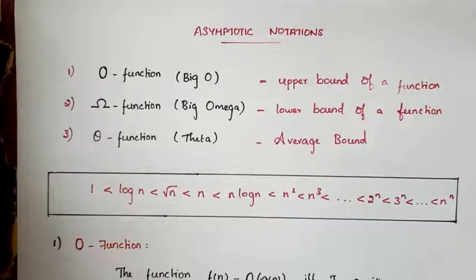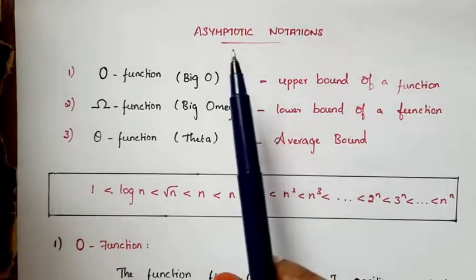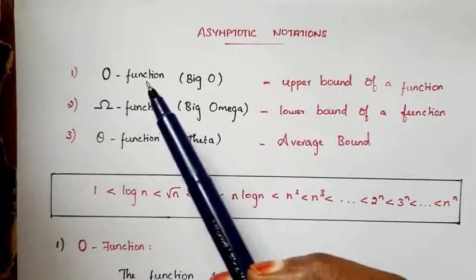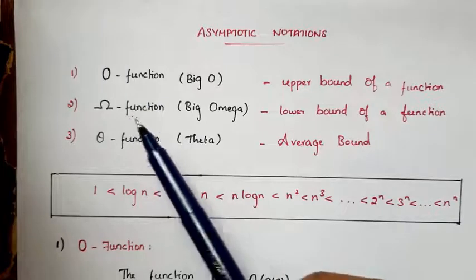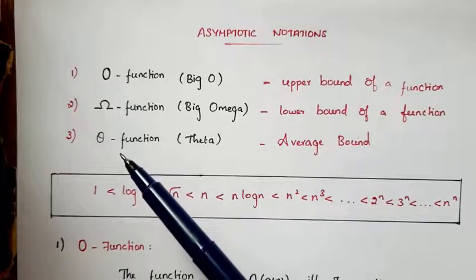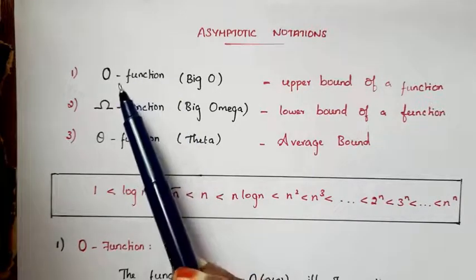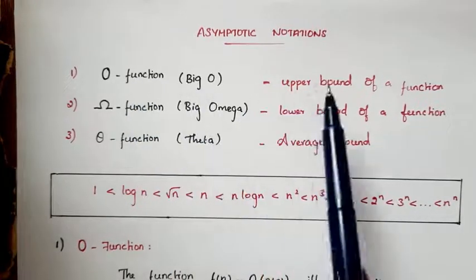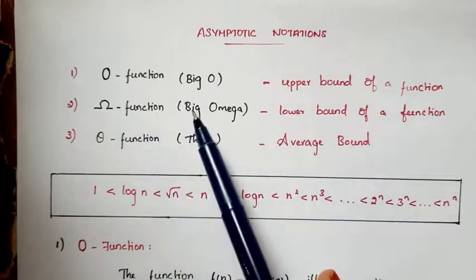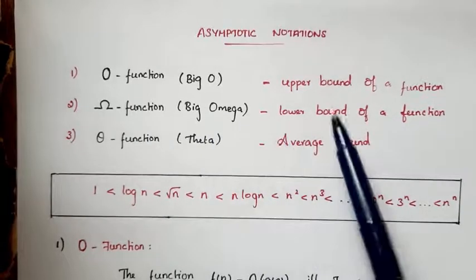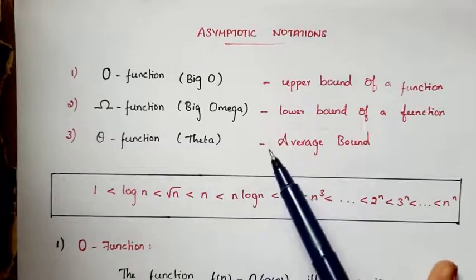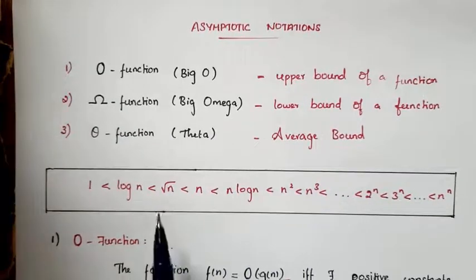In this video we will learn about some asymptotic notations. There are three notations: Big O notation, Big Omega notation, and Theta notation. These notations are very important. Big O notation is used as an upper bound of a function, Big Omega notation works as a lower bound of a function, and Theta notation is the average bound of a function.